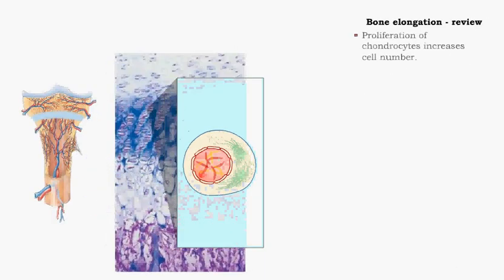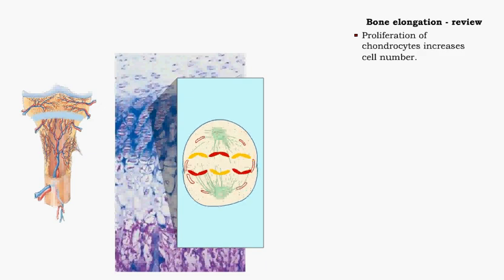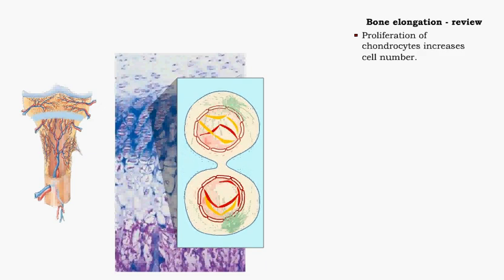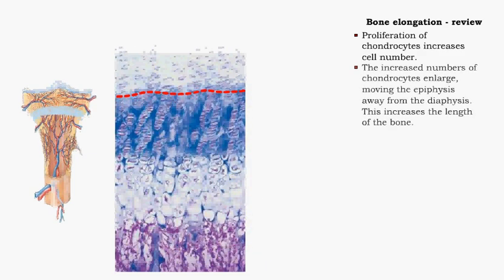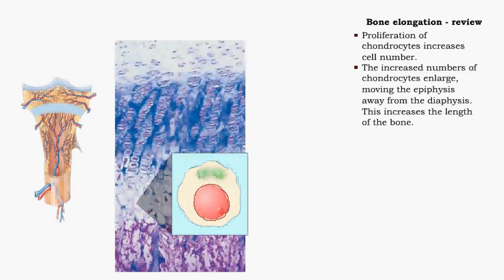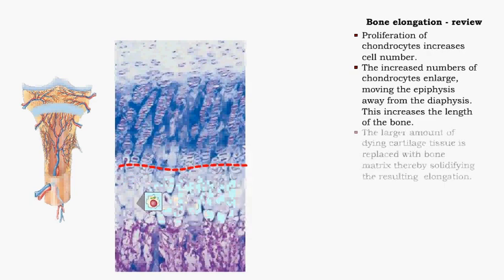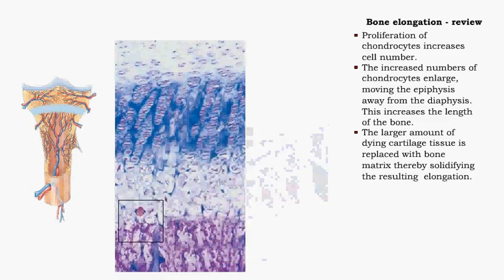Proliferation of chondrocytes increases cell number. The proliferation results in moving the epiphysis away from the diaphysis, increasing the length of the bone. The larger amount of dying cartilage tissue is replaced with bone matrix, solidifying the resulting elongation.